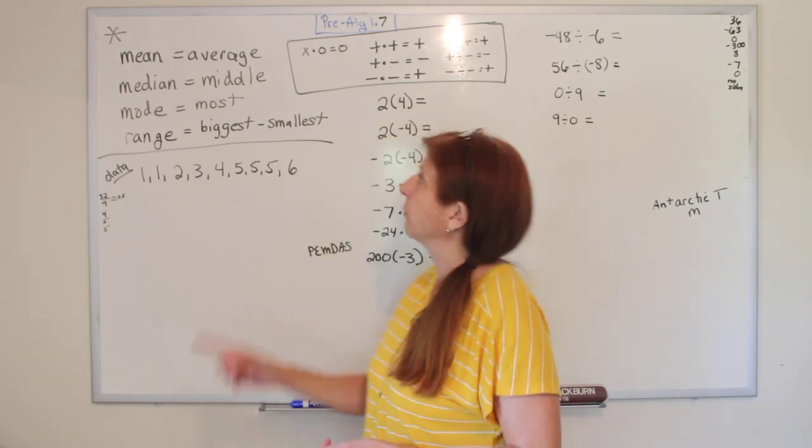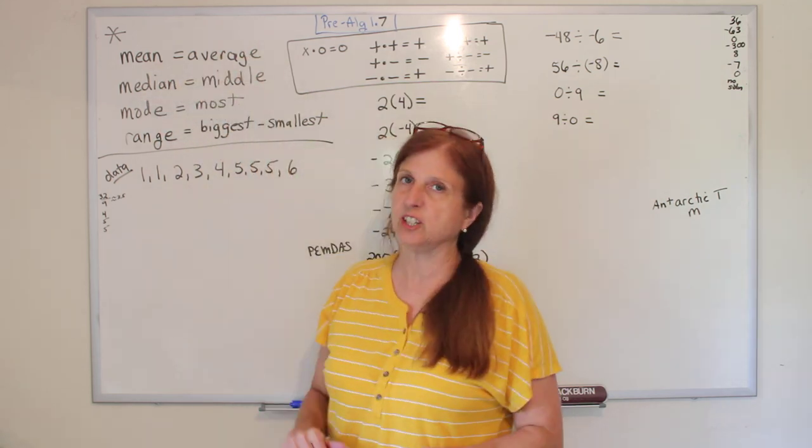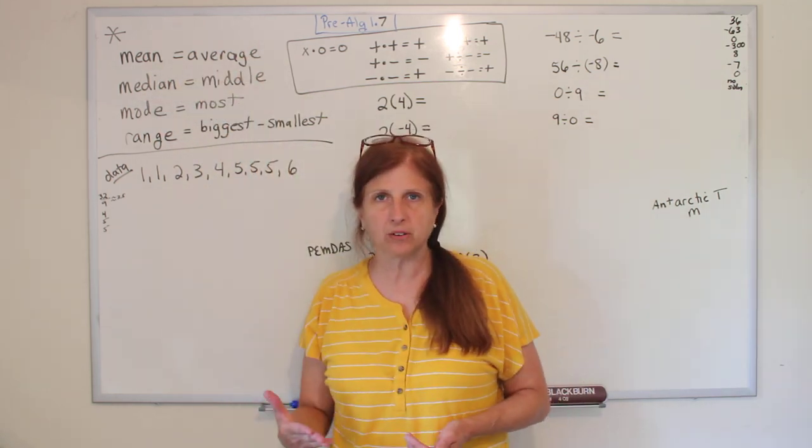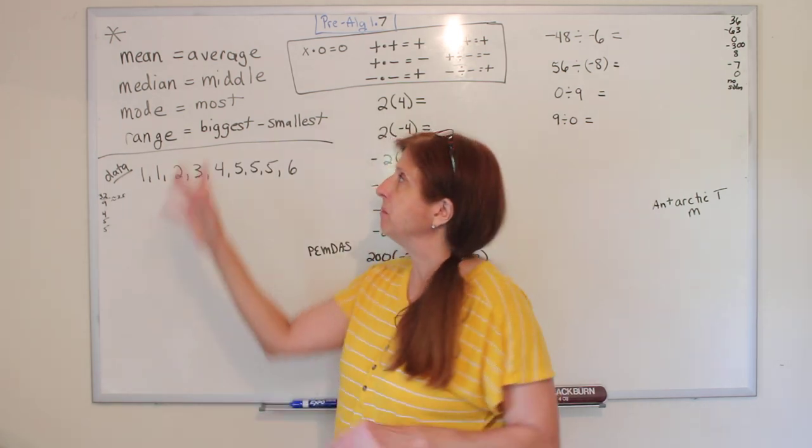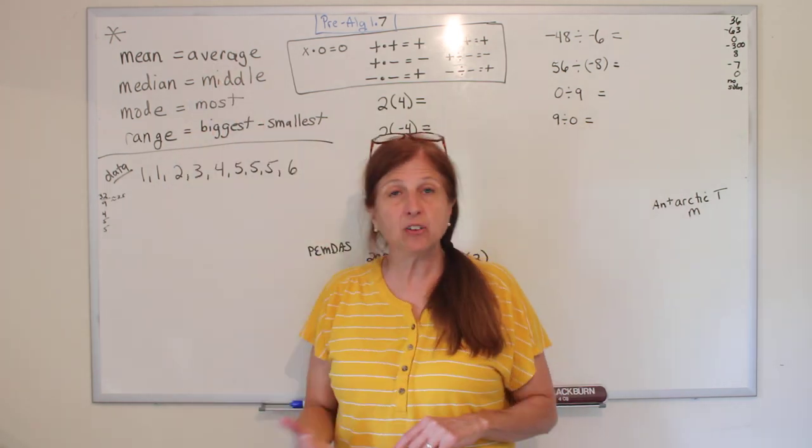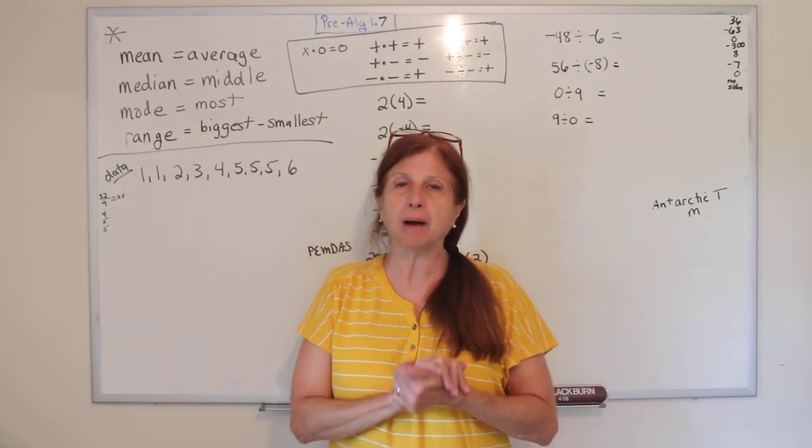The mean is the average. You hear it sometimes on the weather - they'll say the mean rainfall in Georgia at this time of year, and they mean the average. How you make an average is you add everything up and divide by how many you have. We'll do it in a second.